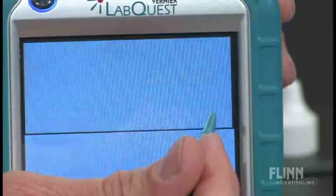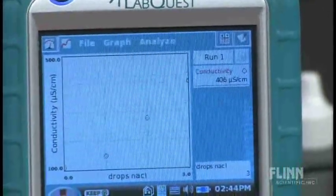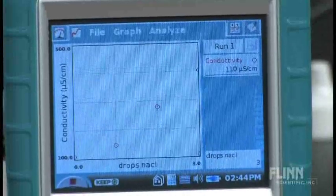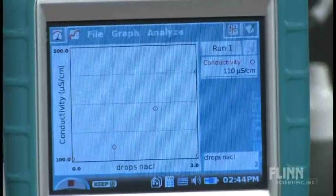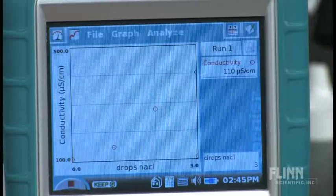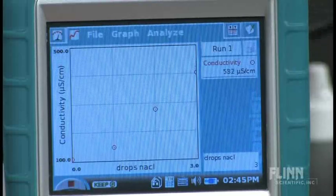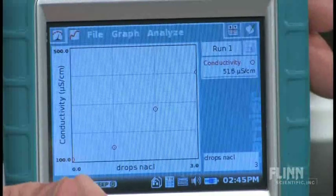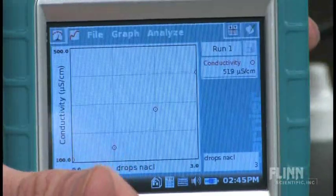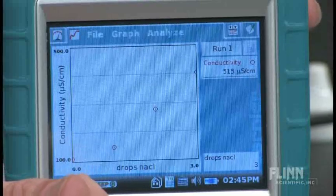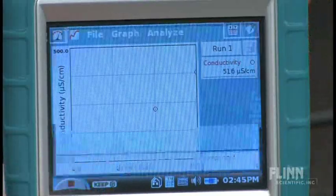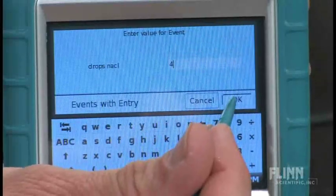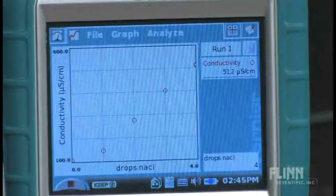I've got to get that one in there. We can see it building a very nice graph. One more drop, please. And give that a swirl. It should be a relatively linear graph. And we'll keep that. That is a total of four drops of sodium chloride that we have there at that point in time.